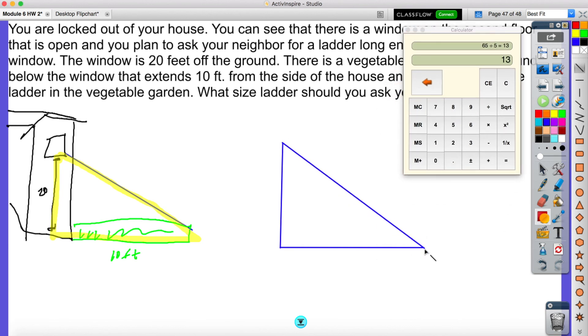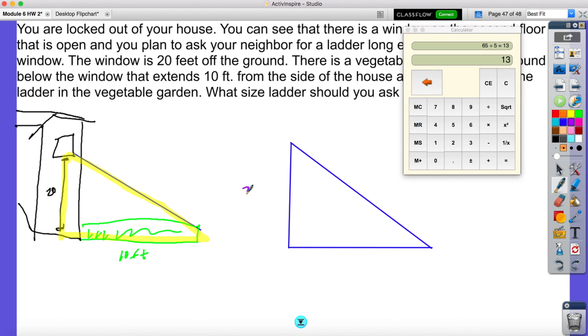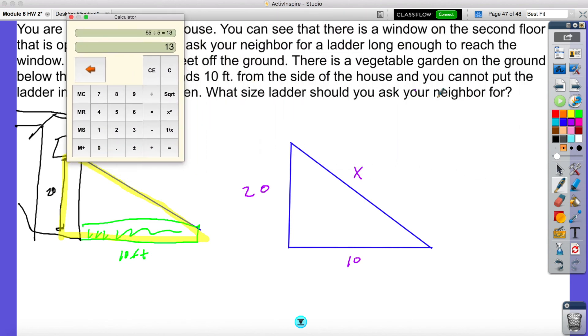So if this is the height of the house, it says it's 20 feet high. This is the garden, which was 10 feet. How long is this? So all I'm going to do is plug these in, and it's going to be 20 squared plus 10 squared equals x squared, or c squared. So this is going to be 400 plus 100 equals x squared, which means 500 equals x squared.